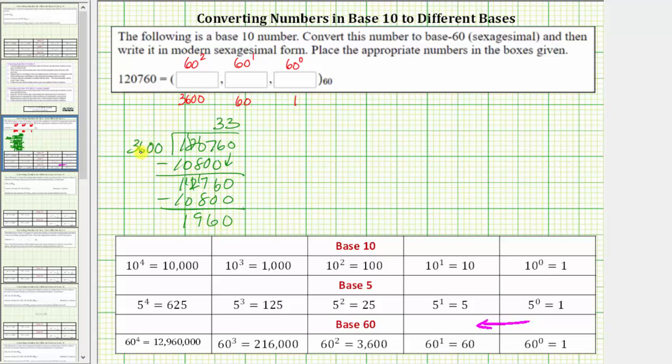1,960 is less than 3,600, and therefore the quotient of 33 is correct, and this is a remainder. And 33 is the whole number in the 60 squared, or 3,600s place value.